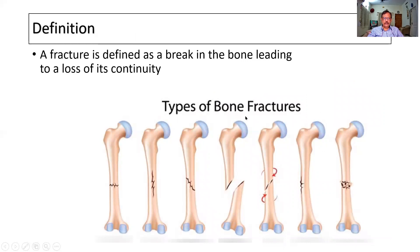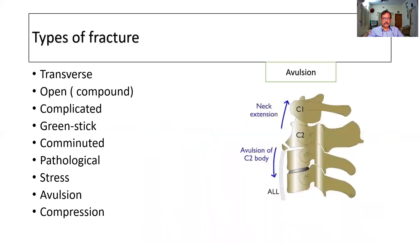There are different types of fractures. The types include a transverse fracture; open or compound fracture, where the bone is exposed to the exterior; complicated fracture, where adjoining structures are damaged; greenstick fracture; communited fracture; pathological fracture; stress or march fracture; and avulsion fracture, where there is a ligamental pull and a small fragment of bone is chipped off. Also, compression fracture.